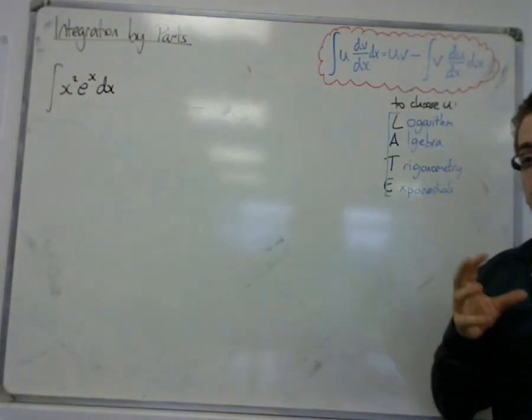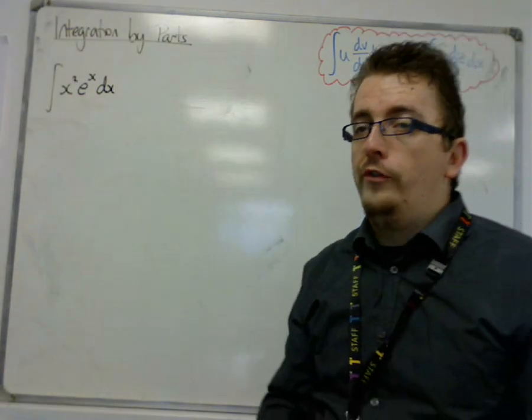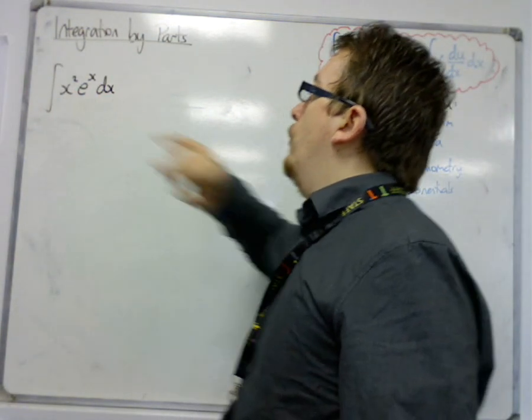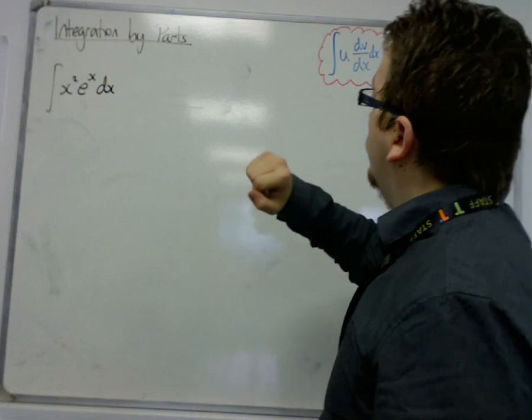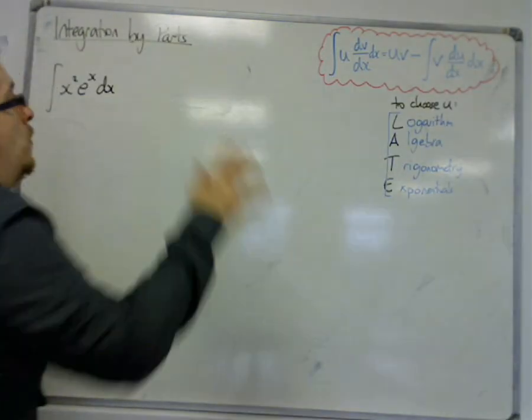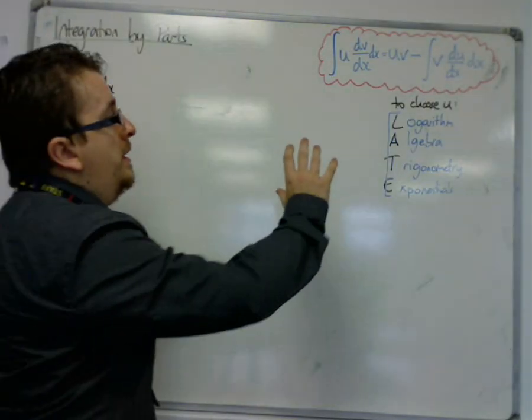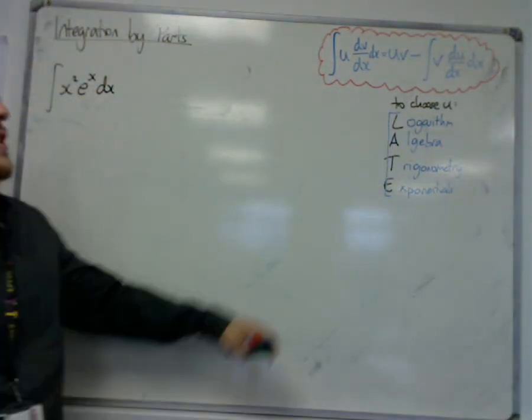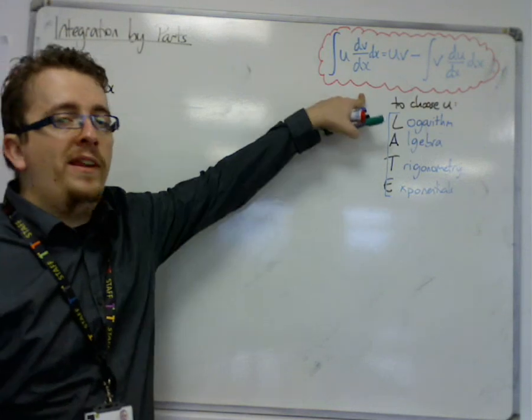This is going to be integration by parts because it is a product of functions within the integrand, x squared times e to the x. So we look back at our formula, and remember we're going to have to pick a u, we're going to have to pick a dv by dx, so we're going to pick u by looking at this LATE rule.